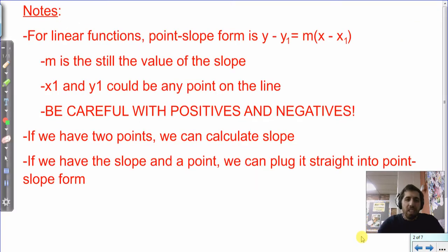First note says that for linear functions, point-slope form is y minus y1 equals m, the slope, times the quantity of x minus x1. So that's what it looks like. But what does that all mean? We know that x is the independent variable, y is the dependent variable. Hopefully these other ones look familiar from our slope equation. So we know that m is still the value of the slope.